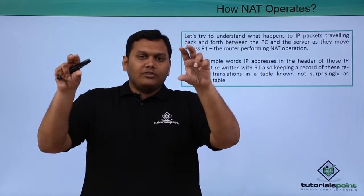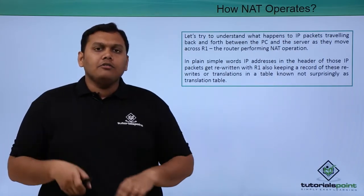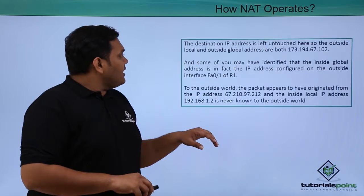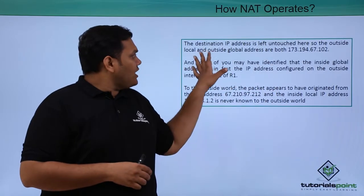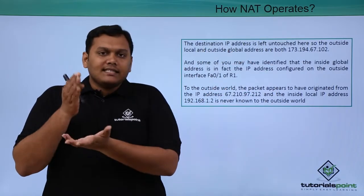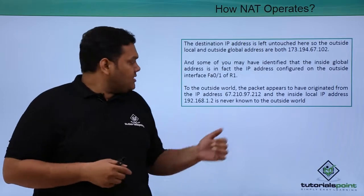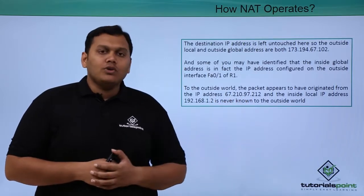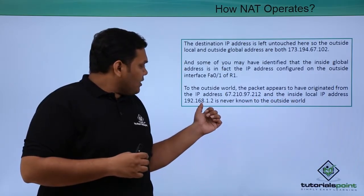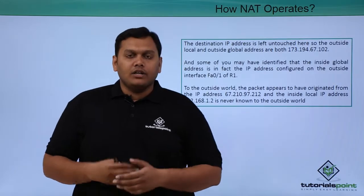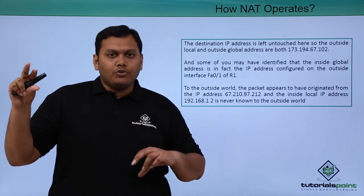The IP address in the packet header is translated to and forth between the inside and outside interfaces. The destination IP address is left untouched because the outside local and outside global addresses are both the same. To the outside world, the packet appears to have originated from 67.210.97.212, and the inside local address 192.168.1.2 is never known to the outside world.